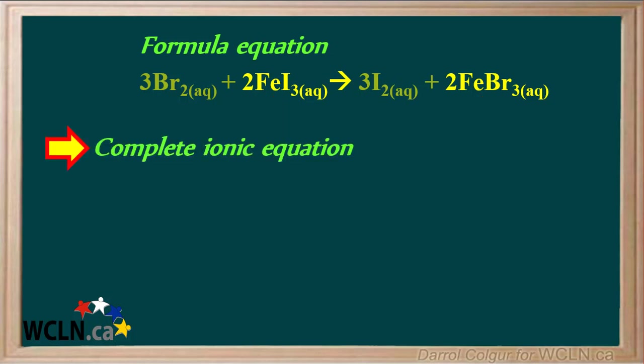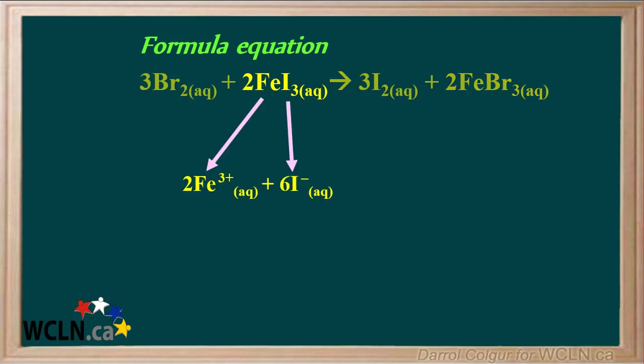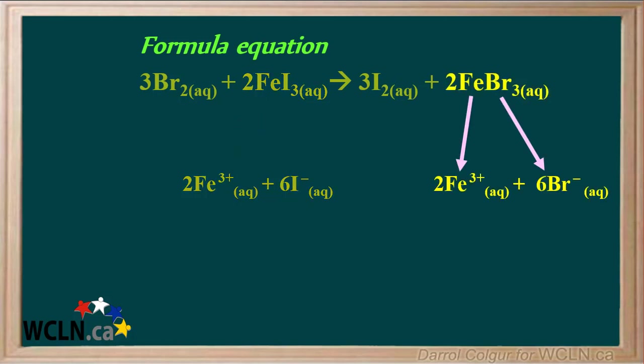Now we can write the complete ionic equation. 2 FeI₃ releases 2 Fe³⁺ ions. One FeI₃ releases 3 I⁻ ions, so 2 FeI₃ release a total of 6 I⁻ ions. 2 FeBr₃ release 2 Fe³⁺ ions and a total of 6 Br⁻ ions.